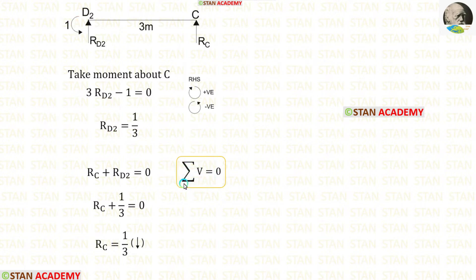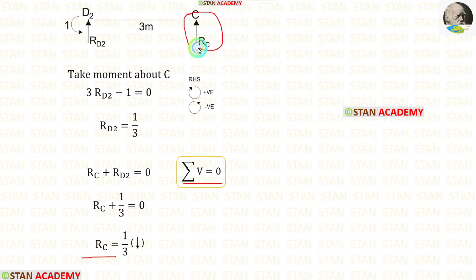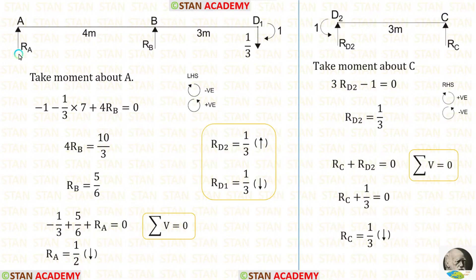We can apply the rule sigma V equals 0. Using this rule, we are getting RC. For RC, we will get a negative value, which means our assumption is wrong. We assumed that RC is acting upwards, but actually it is acting downwards.